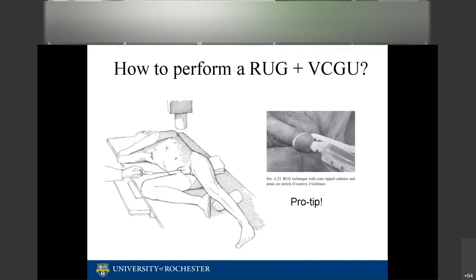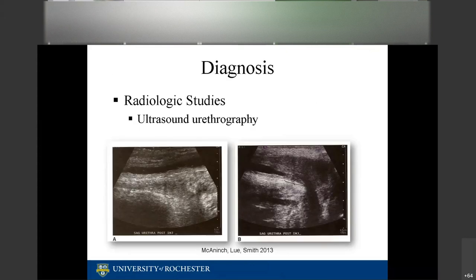For patients with a bad urethral meatal stricture, an angiocath can be used instead of the penis-on-stretch method. Rubber or lead gloves can also be used. The goal is a nice image without causing excessive discomfort. Inform patients about discomfort, risk of urinary tract infection, hematuria, and contrast extravasation. A VCUG should also be performed at the same setting — contrast injected into the bladder with the patient voiding to delineate anatomy.